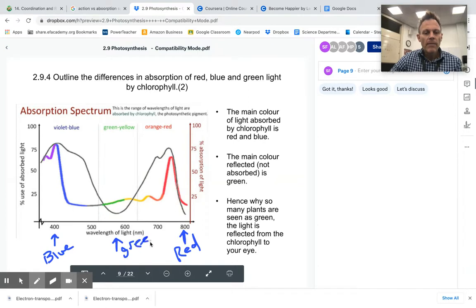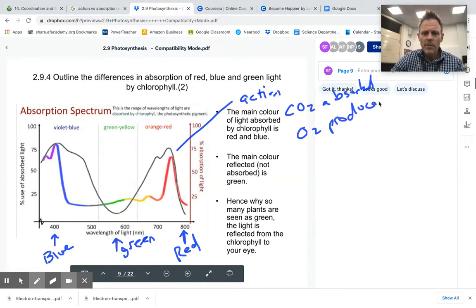So if we look at the black line, the black line is measuring the action. So if you can think of this as action, and the action is photosynthesis. Basically, it's telling us how much CO2 is being used.